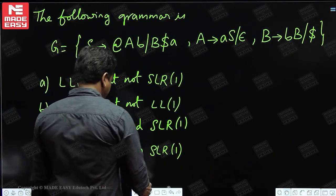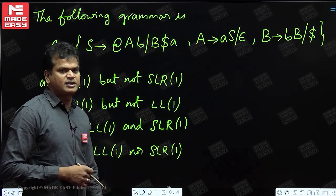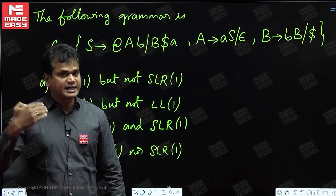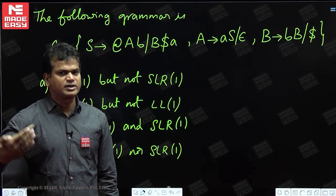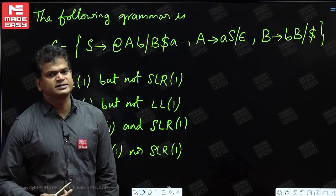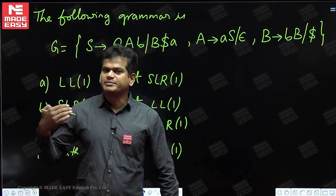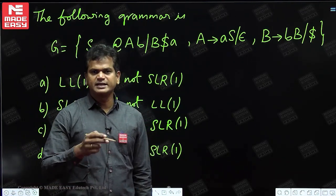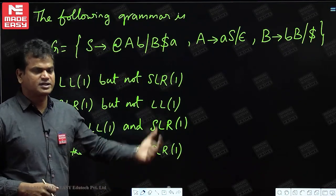Now, first I will check for LL(1). There is no relation between LL(1) and SLR(1). If a grammar is LL(1), it may or may not be SLR(1). Similarly, if a grammar is SLR(1), it may or may not be LL(1). There is no relation between these two. So you have to check them separately — whether it is LL(1) or not, and whether it is SLR(1) or not.